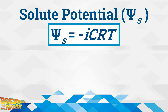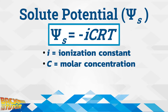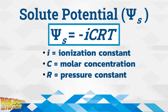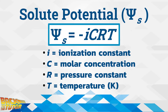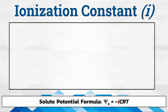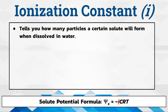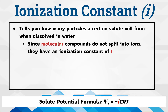Here is the formula for calculating the solute potential: solute potential equals negative ICRT, where I is the ionization constant, C is the molar concentration, R is the pressure constant, and T is the temperature in Kelvin. The ionization constant I tells you how many ions a certain solute will form when dissolved in water. When you place a molecular compound like sucrose, sugar, or glucose in water, the molecule stays intact and won't split into any ions, so the ionization constant is always one. For ionic compounds, however, they split into ions when placed in solution, so each individual ion counts as its own solute particle. For instance, I equals 2 for NaCl, so that's something to keep your eye on.